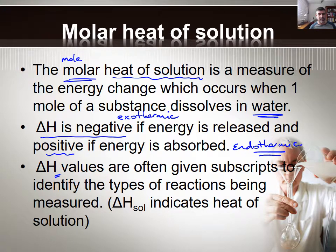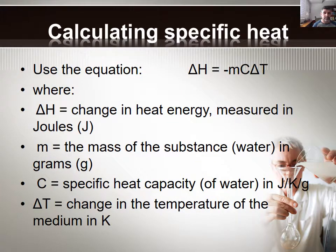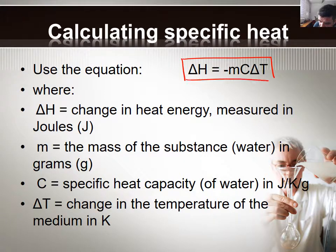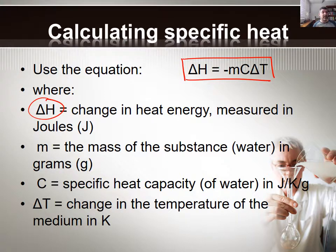We don't look at a lot of different ones in this course, so you won't see too many of them, but you may see notation like delta H with the subscript SOL to indicate the heat of solution. Now we're using the MCAT formula. I mentioned this in a previous video and it's really important that you are aware of this formula. Often you'll be given it on your data sheets, but I hope you'll do enough examples that it'll become second nature to you. The delta H value is the change in heat energy, measured in joules.